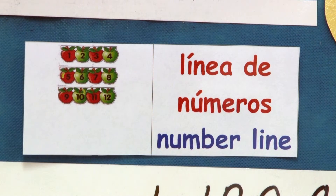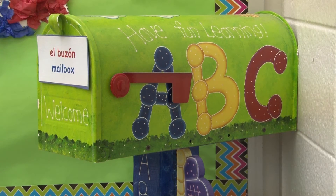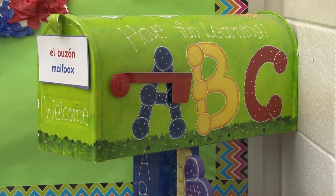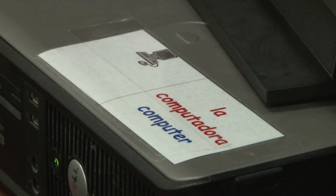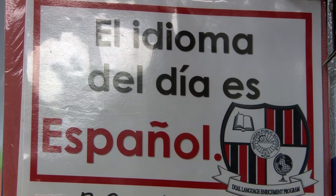It is recommended to have at least 15 to 20 classroom labels at a time that are large enough for students to see from their seats. Another recommendation is to include articles in the Spanish labels. For the lower levels, pictures may be added to labels for visual support. A language of the day sign must also be posted on the outside of the classroom door, announcing the LOD for visitors, school staff, and students.